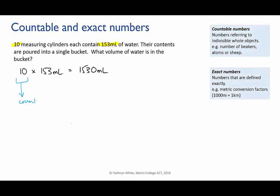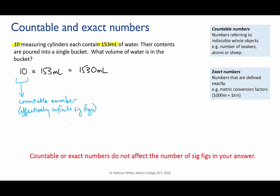It in effect has infinite significant figures. It is known exactly, and as a consequence it does not affect the number of sig figs in your calculation. So here we use the sig figs in the volume measurement to determine our answer. And since there are three, that means that our original, the original answer that the calculator gave, 1530 mils, is actually correct.